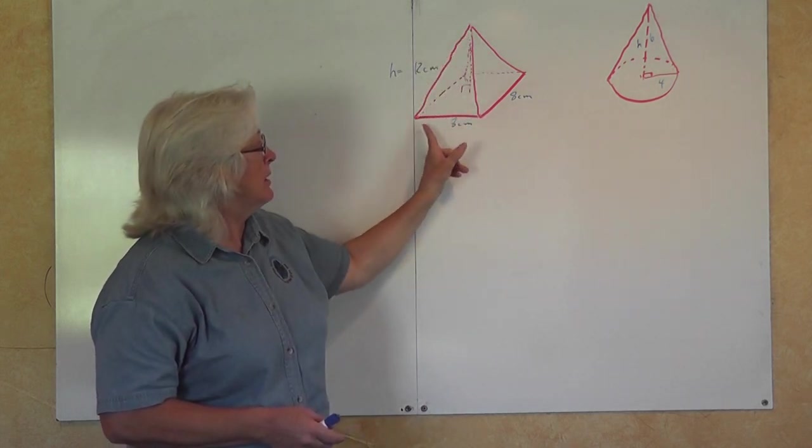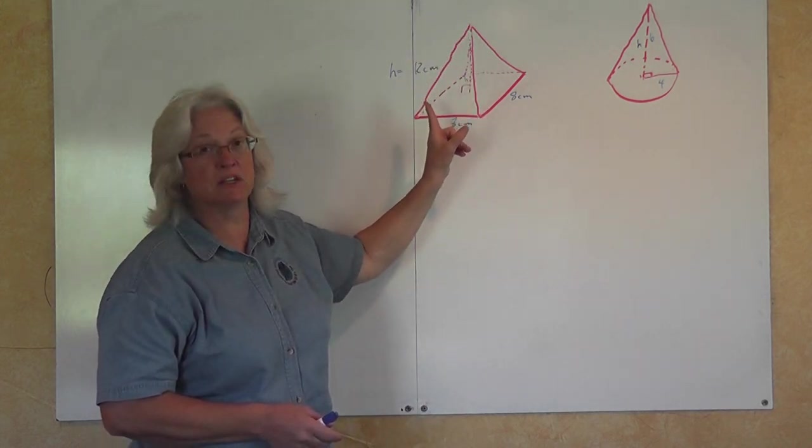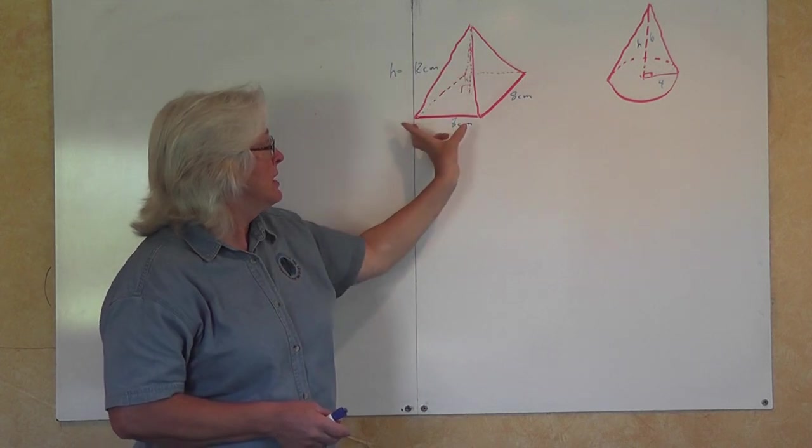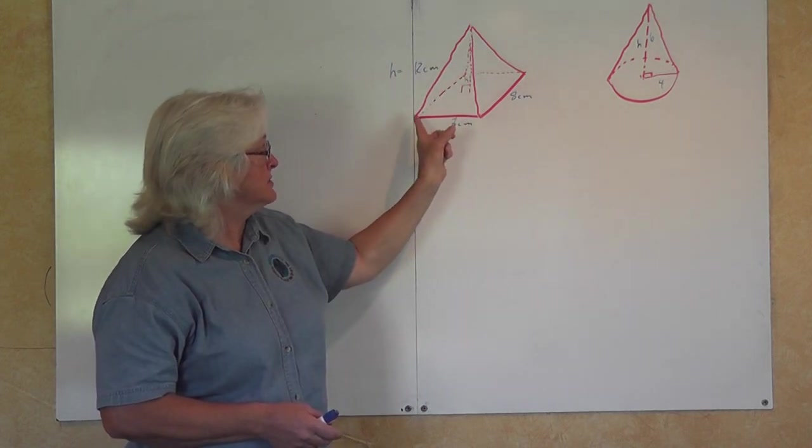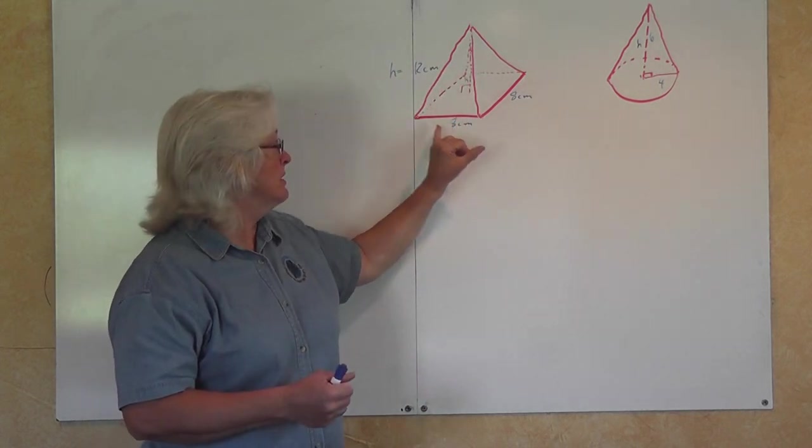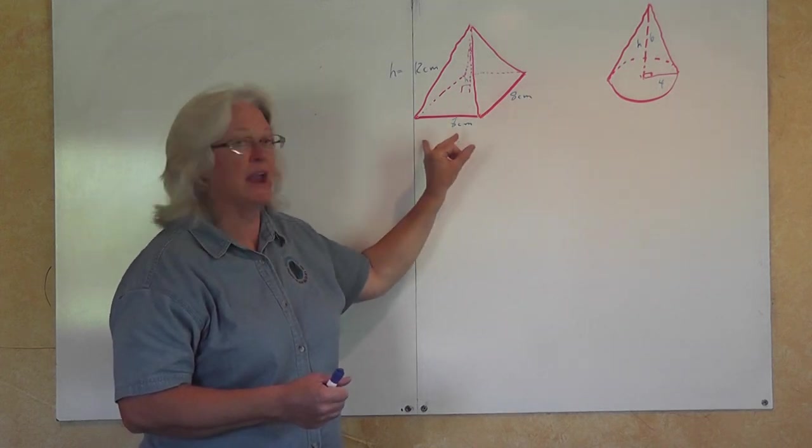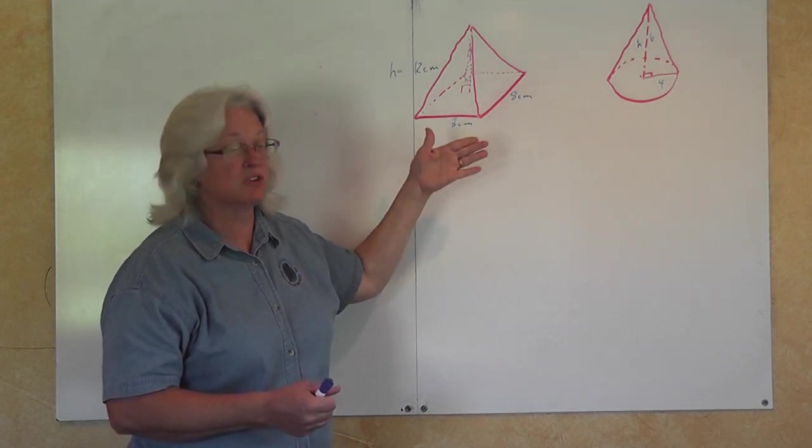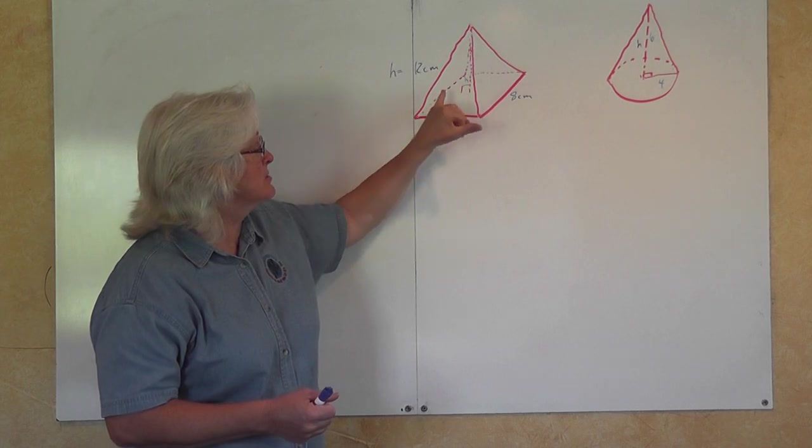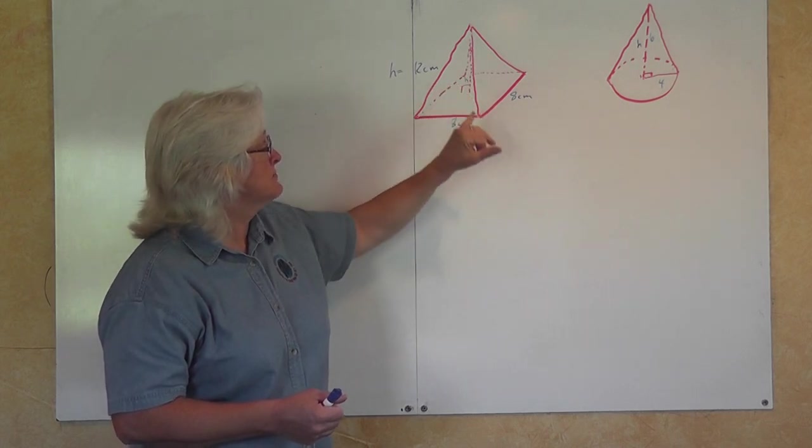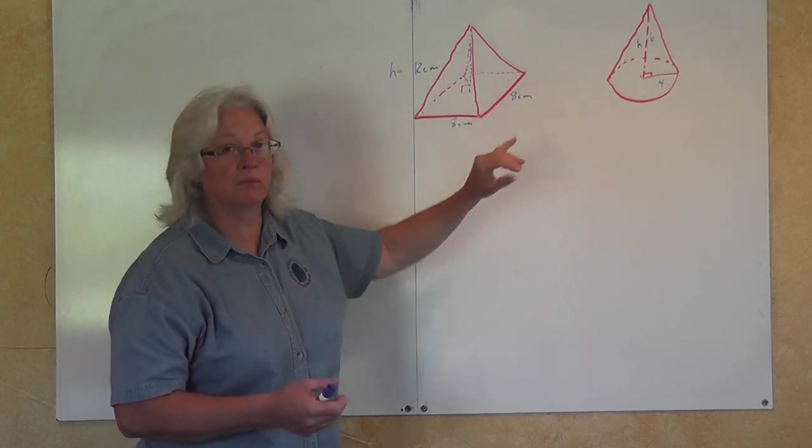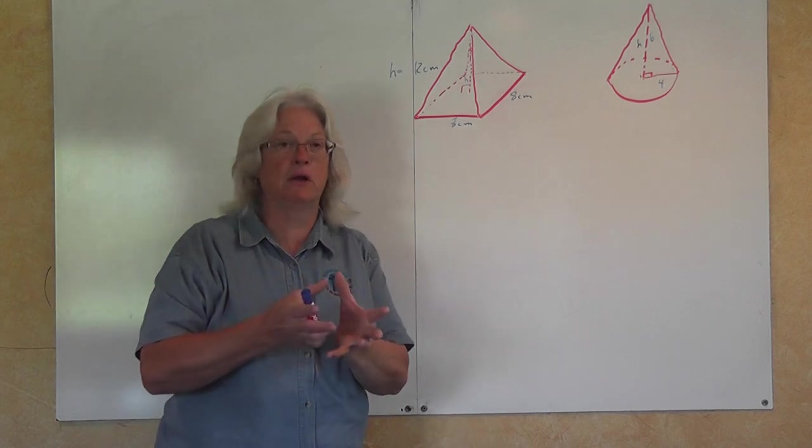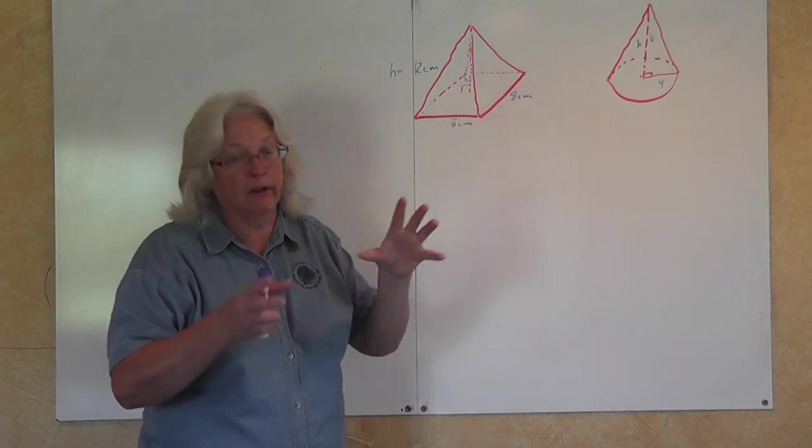But we see that there is a real correlation between a pyramid and a prism. If we had a box that was square on the bottom, 8 centimeters by 8 centimeters, and the height of that box was 12 centimeters, and then we had this cone here. Let's go ahead and fill up our pyramid.